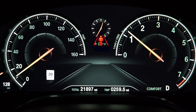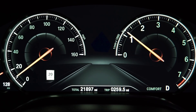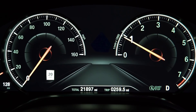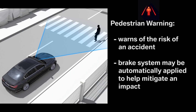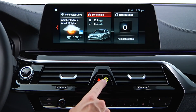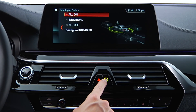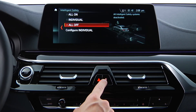A warning signals the risk of an accident and prompts the driver to intervene immediately, for example by braking. If necessary, your vehicle may also automatically apply the brakes to help mitigate an impact. The only way to fully deactivate daytime pedestrian protection is to deactivate all intelligent safety systems by pressing and holding the intelligent safety button until the LED goes out.